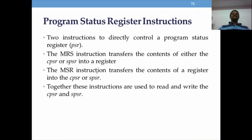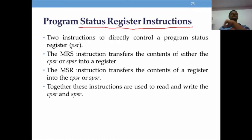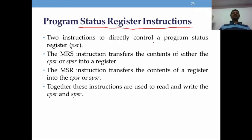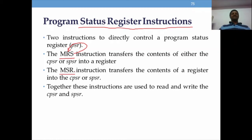Now for program status register instructions: MRS and MSR. MRS means move the content of a status register (CPSR or SPSR) to any general-purpose register (R0–R13). MSR is the opposite — it moves the content of a register to the status register CPSR or SPSR. SPSR works in different processor modes while CPSR is the current program status register.